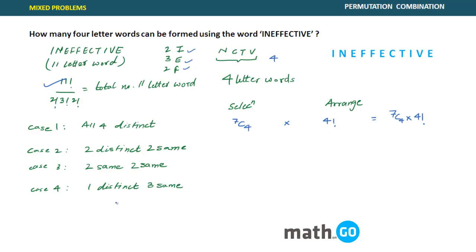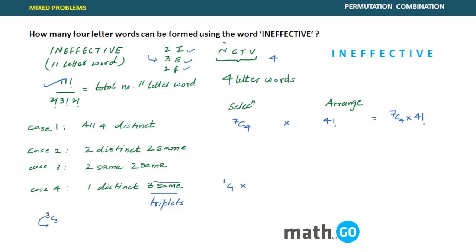For case four — one distinct and three same — the only option for three same is three E's, so that is 1C1. The pool here is triplets; there is only one triplet available, so you select one from one. Now E is taken.